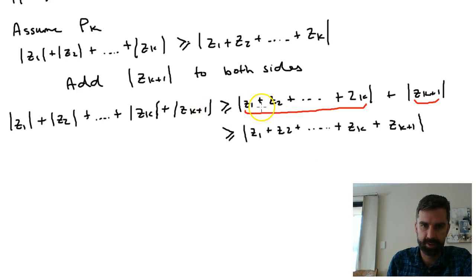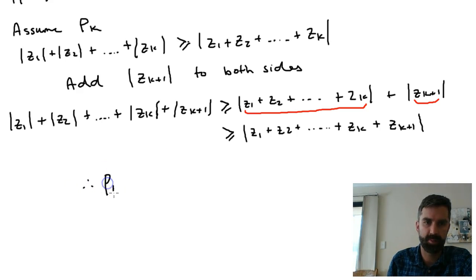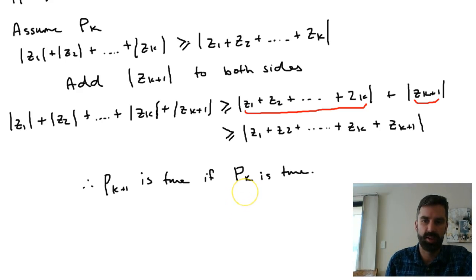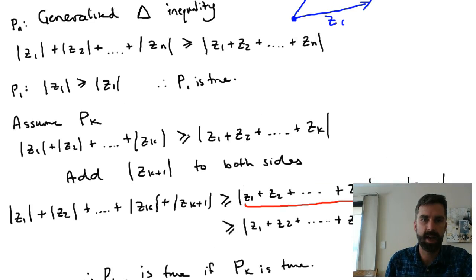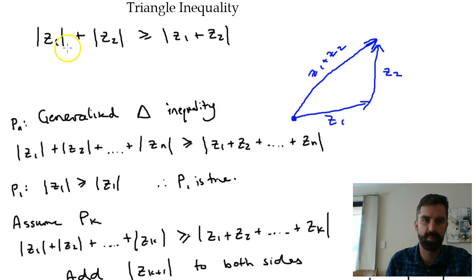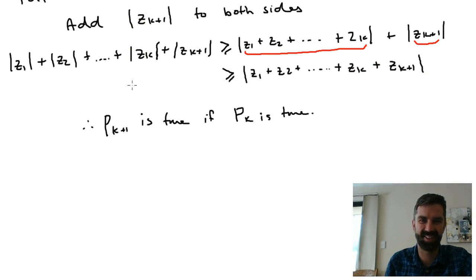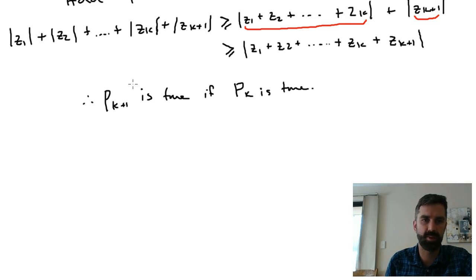Since this statement is greater than or equal to this statement, this is also greater than or equal to this — so what we've actually shown is that P(k+1) is true if P(k) is true. Relatively simple induction proof. What it relies on — and this is true for most induction proofs of complex numbers — is taking the case already proven for two complex numbers and applying that to the case where we've got n complex numbers.